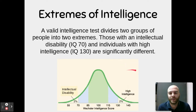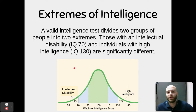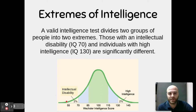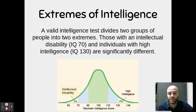A valid intelligence test divides people into two extremes: those with an intellectual disability, which is an IQ of 70 or lower, and individuals who are intellectually gifted, with an IQ of 130 or higher. On the normal curve, these represent people who fall two standard deviations from the mean — a total of less than 3% of the population — so we're talking about a very small section of the overall population.